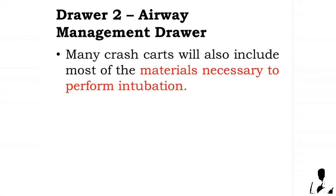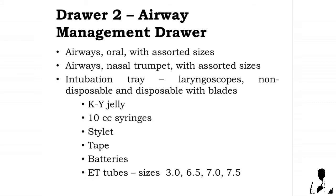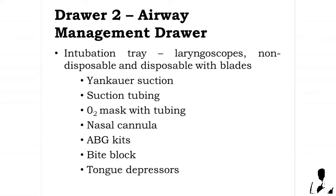Drawer 2 is the airway management drawer. Many crash carts will include most of the materials necessary to perform intubation. This drawer contains: oral airways with assorted sizes, nasal trumpet airways with assorted sizes, an intubation tray, laryngoscopes (non-disposable and disposable) with blades, KY jelly, 10cc syringes, stylet, tape, batteries, and ET tubes in sizes 3.0, 6.5, 7.0, and 7.5.